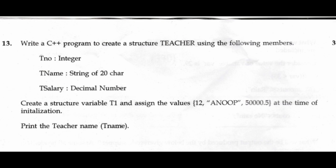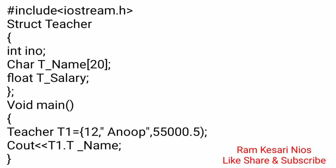Question 13: Write a C++ program to create a structure teacher using the following members: t_number (integer), t_name (string of 20 characters), t_salary (decimal number). Create structure variable t1 and assign values 12, Anoop, 50000.5 at the time of initialization. Print the teacher name t_name. #include<iostream.h> #include<string.h> struct teacher { int t_number; char t_name[20]; float t_salary; }; void main() { teacher t1 = {12, "Anoop", 55000.5}; cout << t1.t_name; } Part marking: 1 for header file, 1 for correct struct syntax, 1 for initializing values and printing.